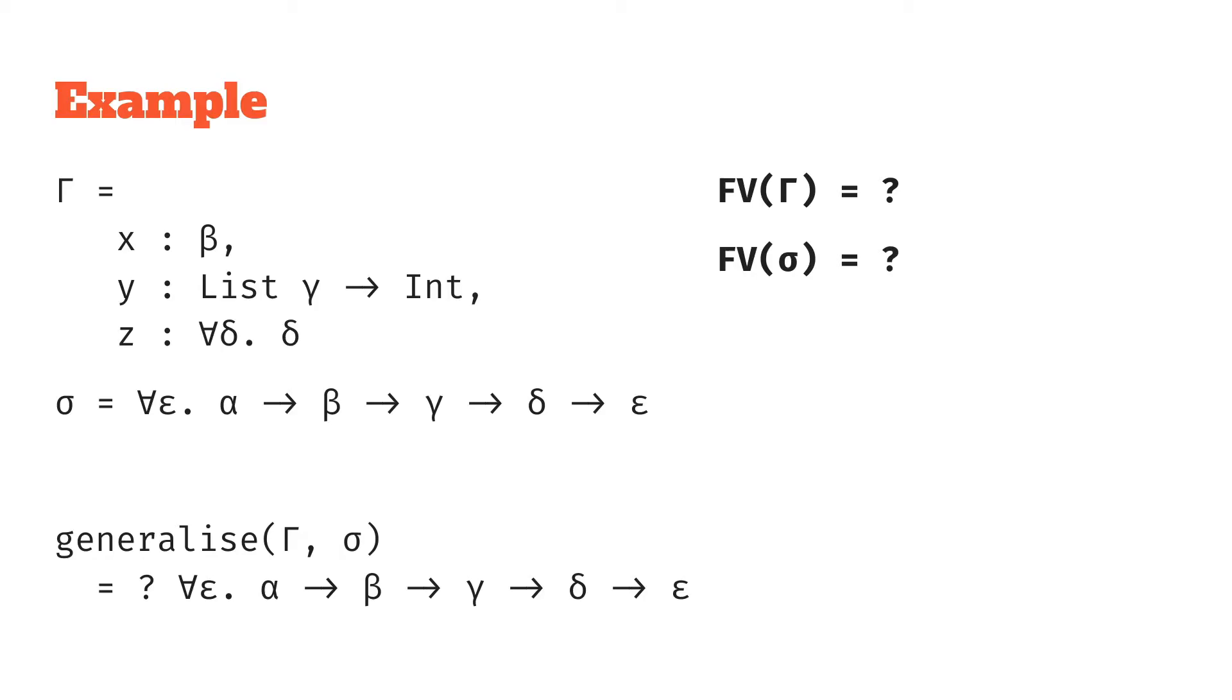Well in the context x is a beta so beta is free, y has lists of gamma to int so gamma is free, z is for all delta delta so delta isn't free because it's bound by that for all quantifier, so it's just beta and gamma.